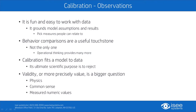Some summary observations: It's fun and easy to work with data — it grounds model assumptions and results. It's important to pick measures that people can relate to. Behavior comparisons are a useful touchstone, but not the only one — operational thinking, units checking, and all that is really important. Calibration is a process of fitting a model to data, and ultimately its scientific purpose is to reject the model. The validity — or more precisely the value — of a model is a much broader question than simply calibration. Physics, common sense, and measured numeric values all need to go into assessing the value of a model for answering questions and guiding policy.